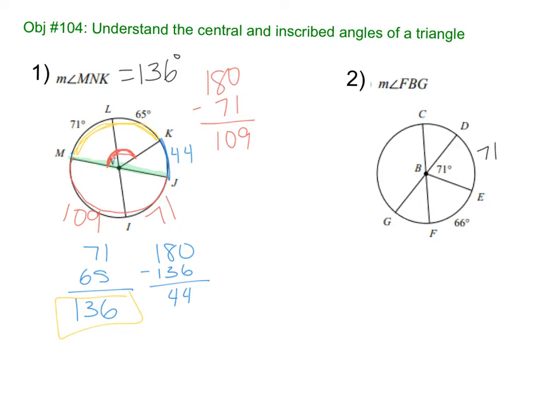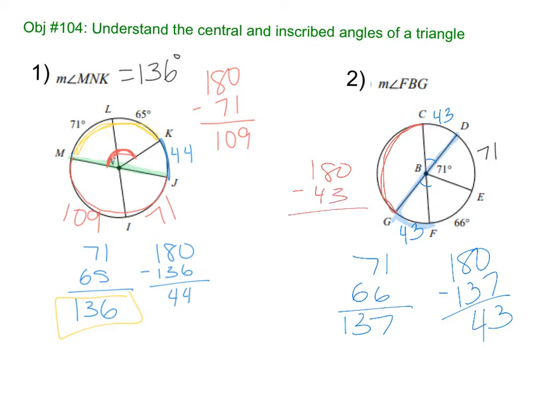So we have 71. Again, I see my radii, my diameter is right here. So that's going to help me find GF. I'm going to add those two, subtract from 180. 71 and 66 is 137. 180 minus 137 is 43. So this piece is 43. The vertical angle is also 43. To find that other missing side, GC, I'm going to do 180 minus 43. And I get 137. So this piece is 137.